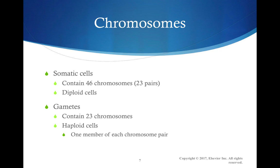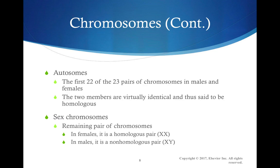We know that there are somatic cells, and somatic cells contain 46 chromosomes, or 23 pairs. There are also gametes that contain only half that amount. Autosomes are the first 22 of the 23 pairs of chromosomes, and the last set has to do with the sex chromosomes — the X and the Y.